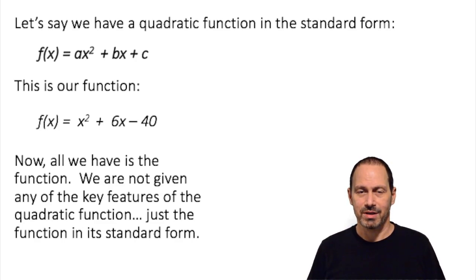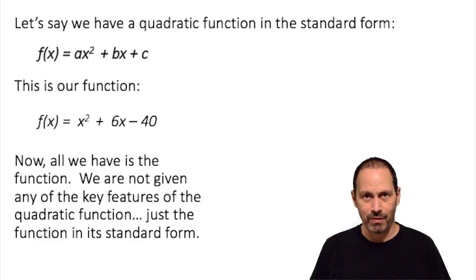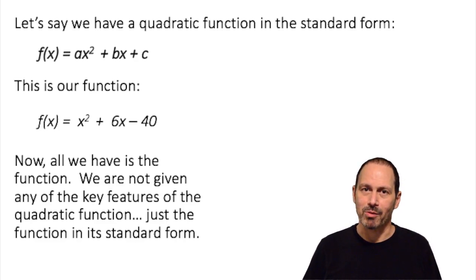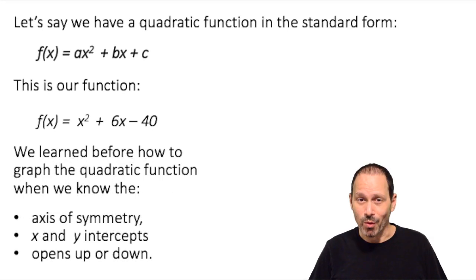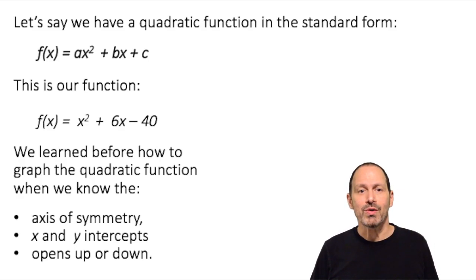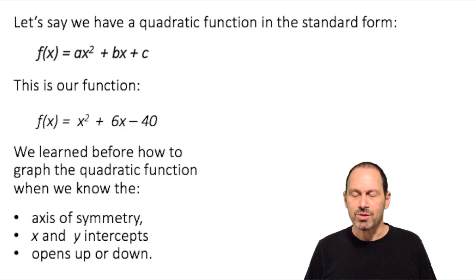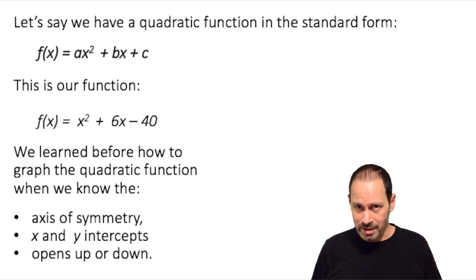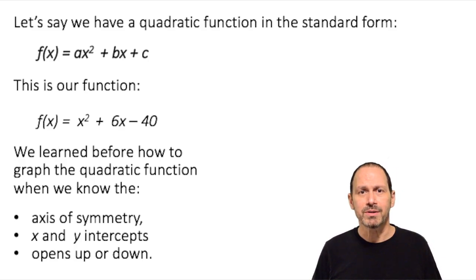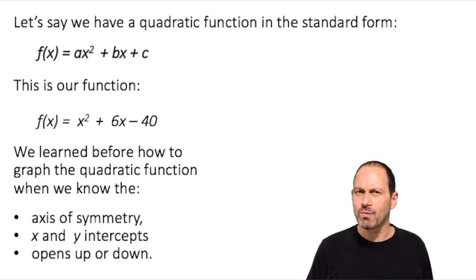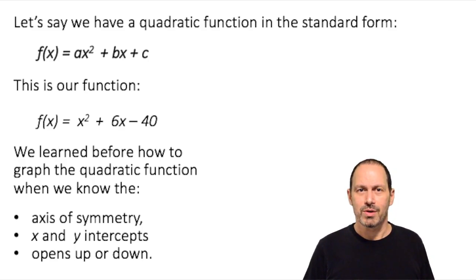How would we graph this? How can we graph the parabola? We learned before in the prior video how to graph the quadratic function when we know the axis of symmetry, the x and y-intercepts, and whether the parabola opens up or downward. We're not going to go over how to calculate those things here — that's all in the prior video. We are simply going to assume that we know that.